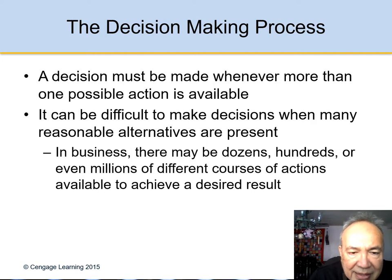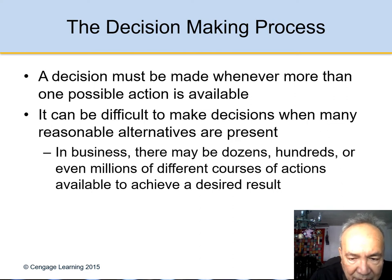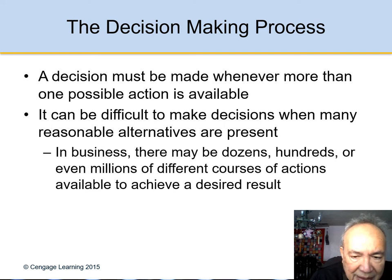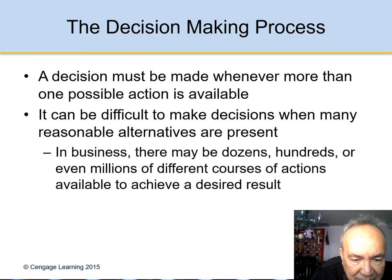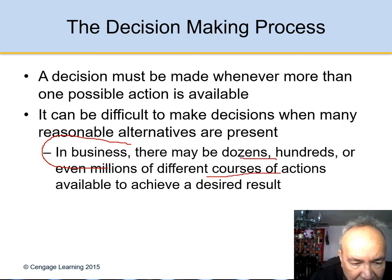A decision must be made whenever more than one possible option is available. It can be difficult to make decisions when many reasonable alternatives are present. In business, there can be dozens, hundreds, or even millions of different courses of action available to achieve the same result.